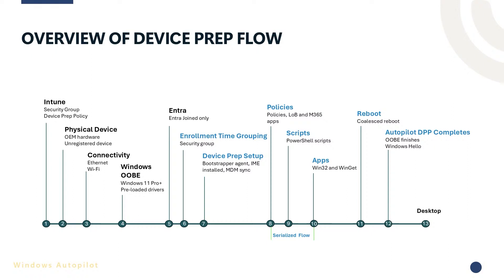All of this will be reflected in the report. Then finally, we have a reboot — if any reboots are required, we'll combine those into a consolidated reboot at the very end. We'll complete the OOBE process, show Windows Hello for Business if configured for your tenant, and then let the user go to the desktop, at which point any additional apps, scripts, and policies not set in the device preparation policy will get delivered to the user, and the user is ready to start their work.